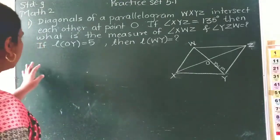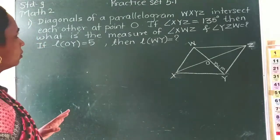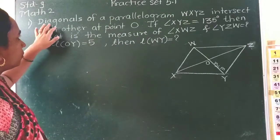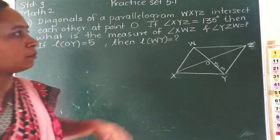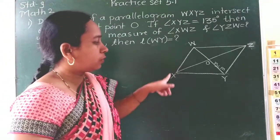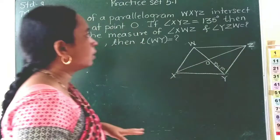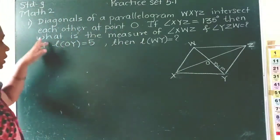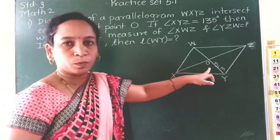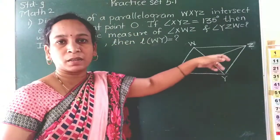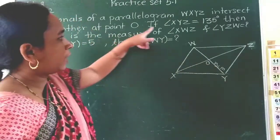In this first example from practice set 5.1, diagonals of a parallelogram W, X, Y, Z intersect each other at point O.